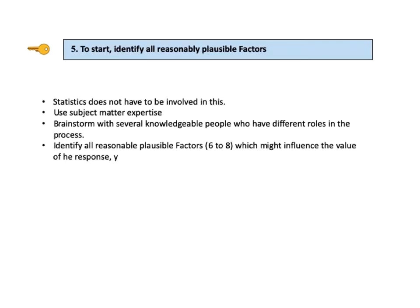The fifth and final Key to Understanding in this Part 1 video says: to start, identify all reasonably plausible factors. Statistics need not be involved in this step. Instead, use subject matter expertise, preferably from brainstorming with several knowledgeable people who have different roles in the process, to identify all reasonably plausible factors which might influence the value of the response. Typically there would be six to eight or more of these. You'll see examples in the videos DOE Part 2 and Part 3.